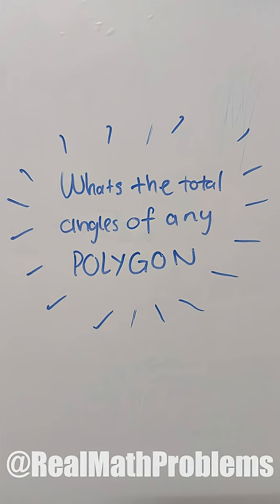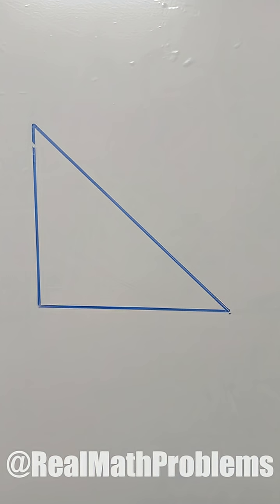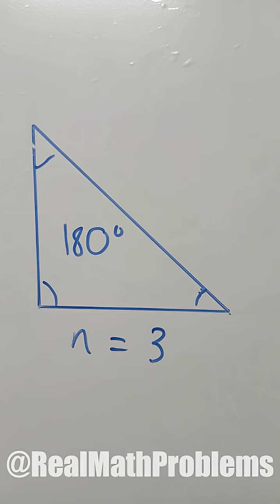What's the total angle of any regular polygon? We have known that the total angle of a regular polygon with the number of edges n equals 3, or a regular triangle, is 180.